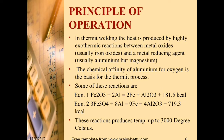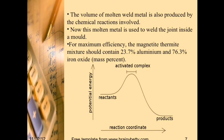Principle of operation: In thermite welding, the heat is produced by highly exothermic reactions between metal oxides — usually iron oxides — and a metal reducing agent, usually aluminium or magnesium. The chemical affinity of aluminium for oxygen is the basis for the thermite process. The reactions are: Equation 1: iron oxide + 2Al → 2Fe + Al₂O₃ + 181.5 kcal. Equation 2: iron oxide + 8Al → 9Fe + 4Al₂O₃ + 719.3 kcal. These reactions produce temperatures up to 3000°C, and the volume of molten metal is also produced by the chemical reactions involved.